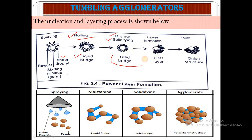After the solid bridge forms, layer formation occurs — this is the first layer — and after layer formation we get pellets. This is the mechanism involved in tumbling agglomeration. In summary: powder material is first sprayed with binder liquid, then a liquid bridge forms in the moistening process, followed by a solid bridge in the solidifying process, resulting in a solid structure of large particles.